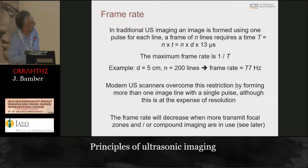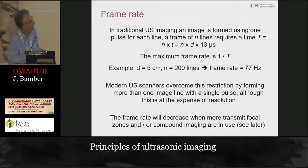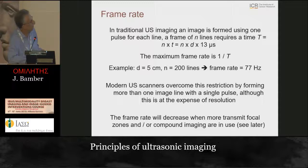The time to wait for one image line is the depth D multiplied by 13 microseconds, if D is in centimeters. We then multiply by the number of lines in the image to get the total frame time. The frame rate is the reciprocal of that. As an example: five centimeters depth, 200 lines, gives a frame rate of 77 Hertz.